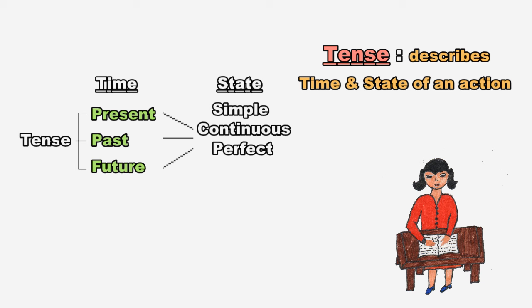Tense has four forms based on the state of action: simple, continuous, perfect, and perfect continuous. Kari ke avastha ke anusar tenses ki ye chaar forms hain. Kari kisi bhi avastha — simple, continuous, perfect ya perfect continuous — mein kyon na ho, kari hamesha present, past ya future samay ka hi hoga. Hence, present, past and future are three main forms of tenses, which are divided into simple, continuous, perfect and perfect continuous.